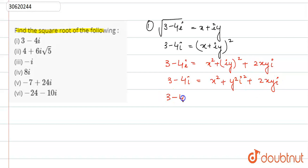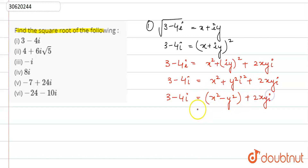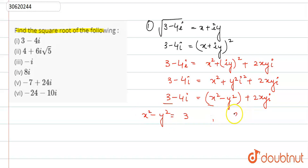So that is: 3 minus 4i equals x squared minus y squared plus 2xyi, since i squared equals minus 1. Now the real part gives us x squared minus y squared equals 3, and the imaginary part gives 2xy equals minus 4.